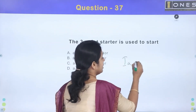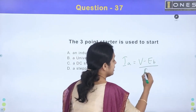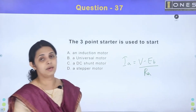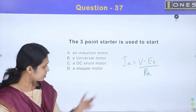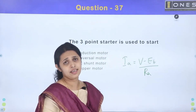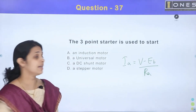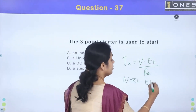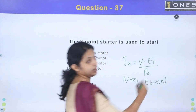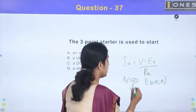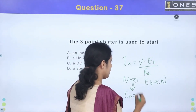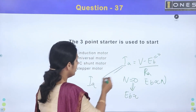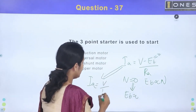The armature current Ia equals (V minus Eb) divided by Ra, where V is applied voltage, Eb is back EMF, and Ra is armature resistance. At the starting moment, speed N equals zero, so back EMF is zero. Therefore, current equals V divided by Ra.